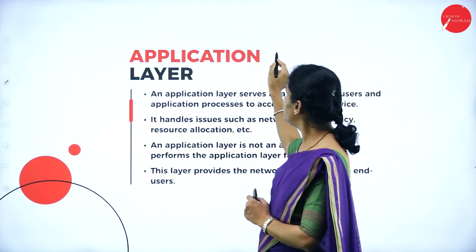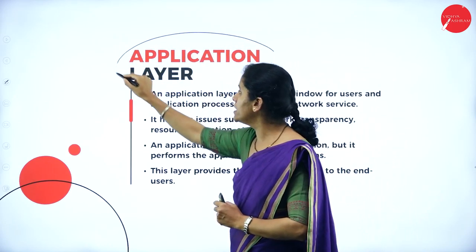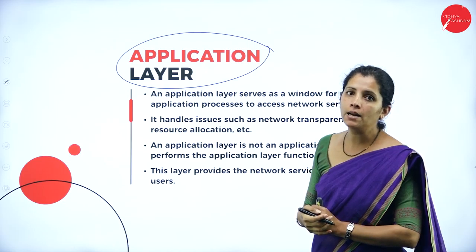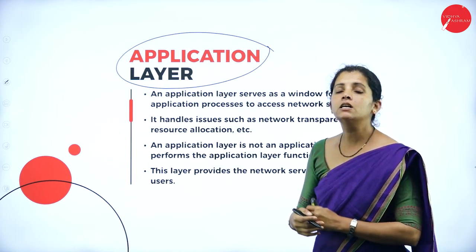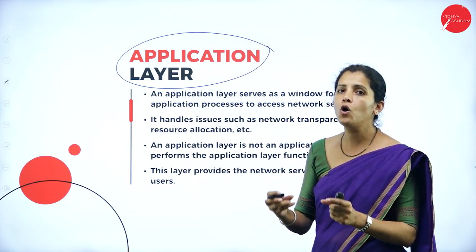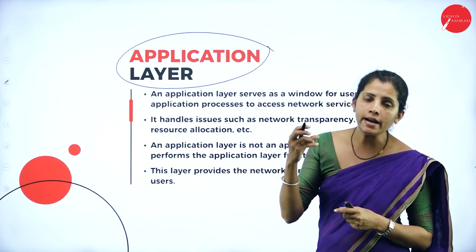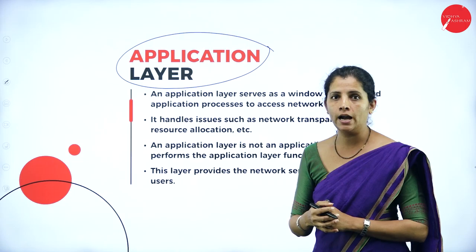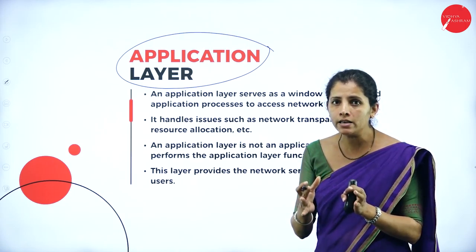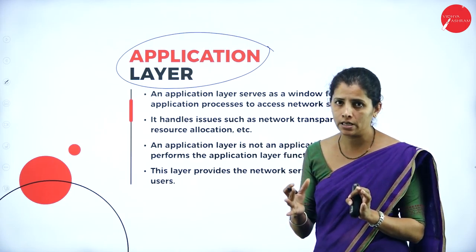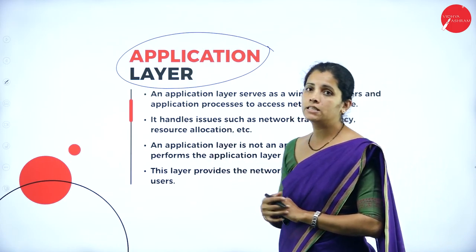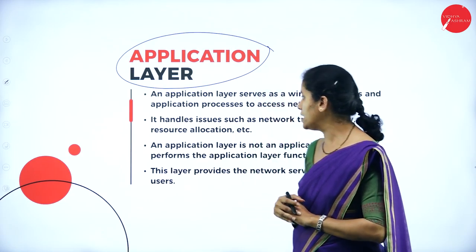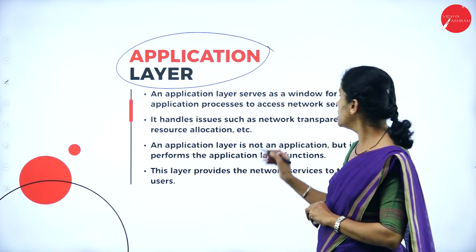The top layer of the OSI reference model is the application layer. It acts as a window for all users to send and receive data, and as a mediator for all network devices. It is responsible for handling issues like network transparency and resource allocation.